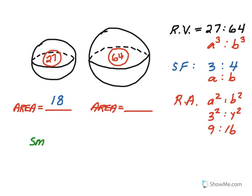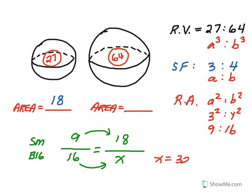So using a proportion small to big to get the areas, I know if the ratio of the areas small to big is 9 to 16, that this is going to correspond to a given area in the smaller sphere of 18 over an unknown area in the bigger sphere of X. And solving, I can see times 2 here. So times 2, I can see that X is equal to 32.